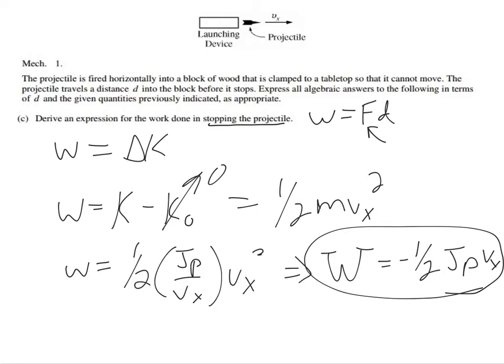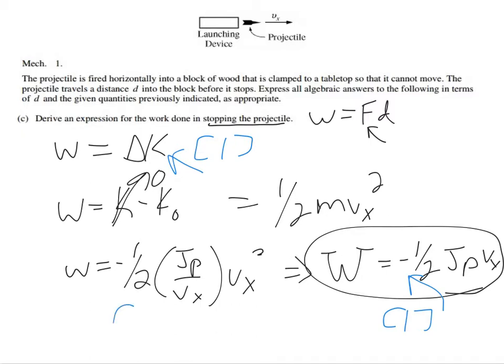Remember that the mass we had just gotten before as being J_p over v_x. So I get that the work is equal to one-half J_p v_x. This one was three points, so one point for the answer - oh sorry, not done yet because the work in stopping the projectile should be negative. Technically if this is the work done to stop the object, then the final kinetic energy is zero, so then we just got negative here, negative there.